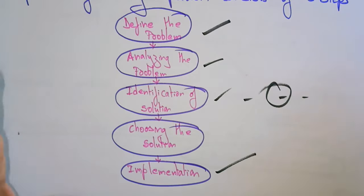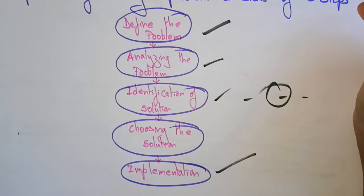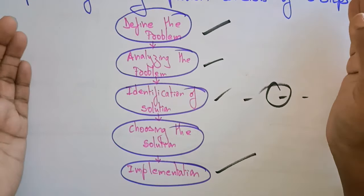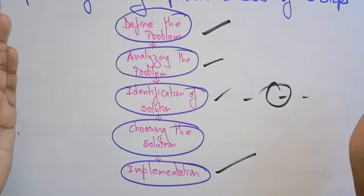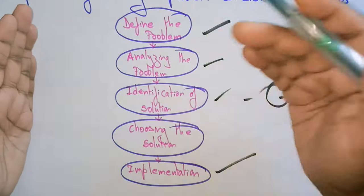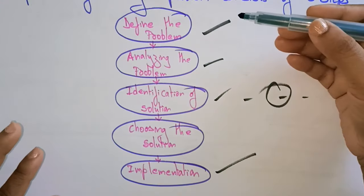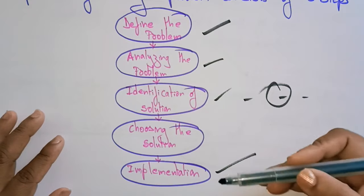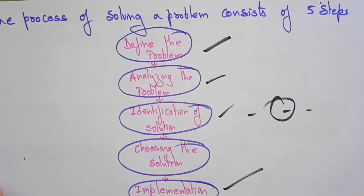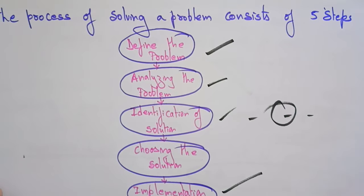Whatever concept you are working on, if you want to implement it using artificial intelligence — including the searching technique — you have to follow these steps. In general, to solve any problem: define the problem, analyze it, identify solutions, choose a solution, and then implement it.